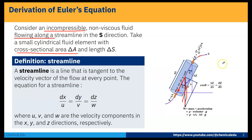Looking at the geometry, I am considering a datum line. From the datum line to the upper surface, the distance is δZ. The fluid element length is δS, and from the datum line to the other point is δZ. So cosθ = δZ/δS.